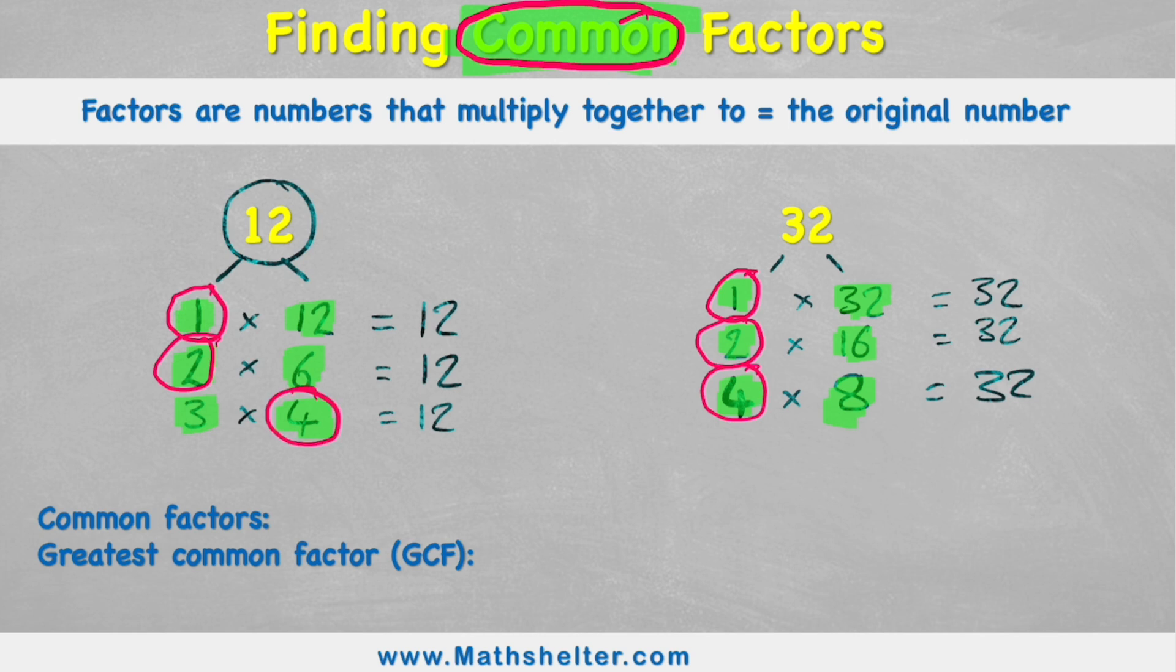So the common factors of these two numbers are 1, 2, and 4. And you've guessed it, the greatest common factor, the biggest common factor, would be 4, because 4 is the biggest number in our group of common factors.